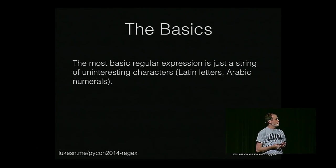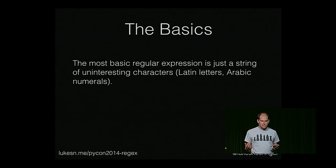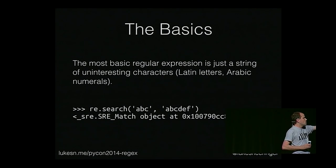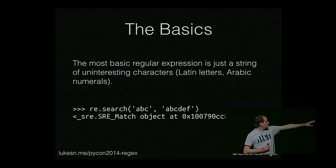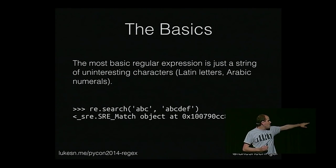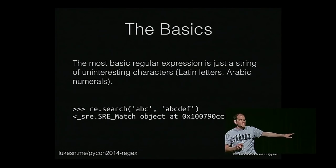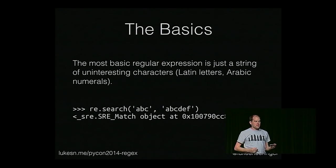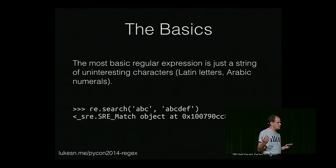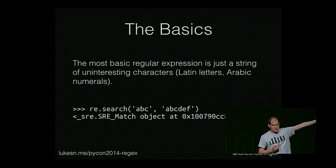The most basic regular expression is really just a string of uninteresting literal characters. ABC is a regular expression, and it matches ABC. The first argument to RE.search is your regular expression — just the literal characters A, B, and C — and the haystack is ABCDEF, and it brings back a match object. If this is what you wanted, you would just do ABC in ABCDEF. If you're searching for something that doesn't match, you're just going to get back None.